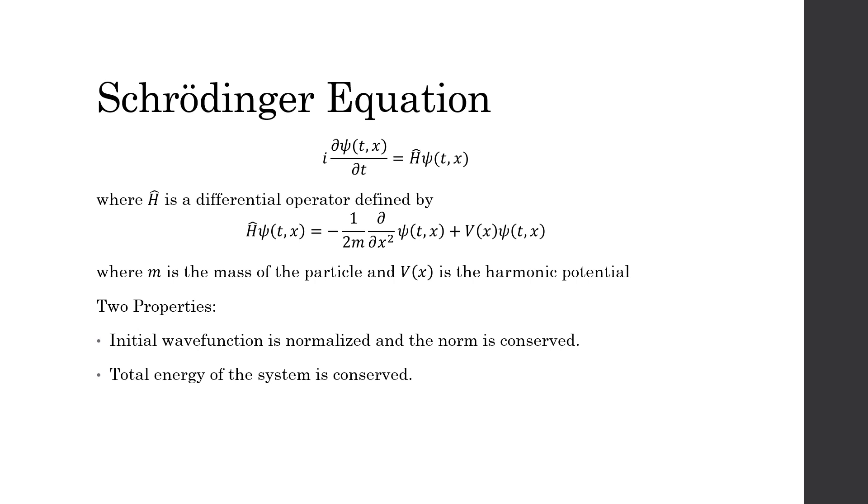The Schrödinger equation is represented by i times the partial derivative of ψ with respect to t equals the Hamiltonian H applied to ψ.